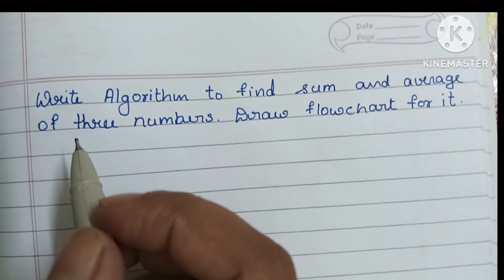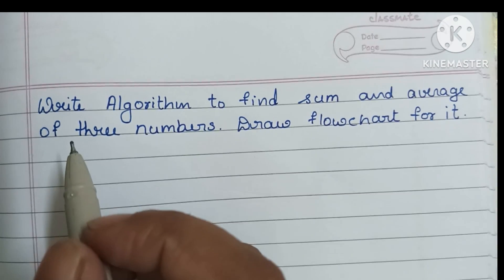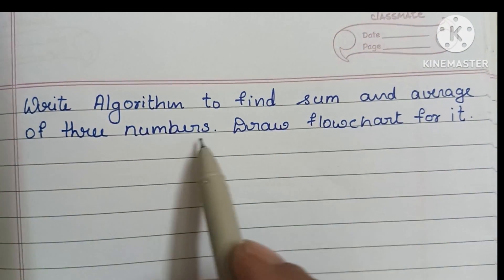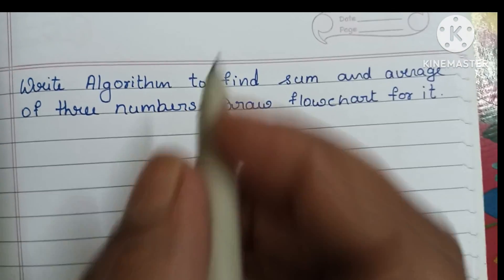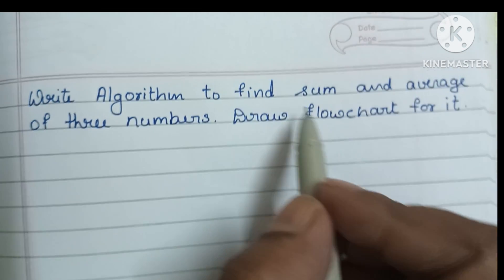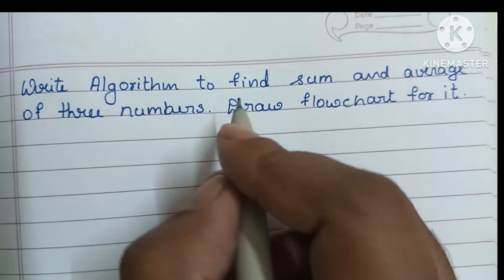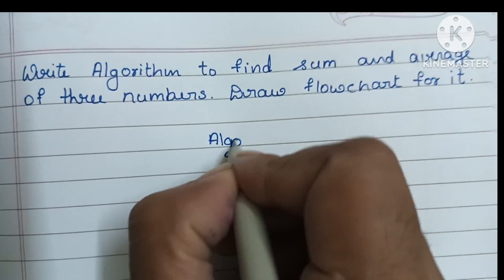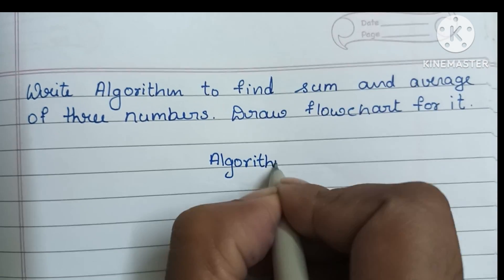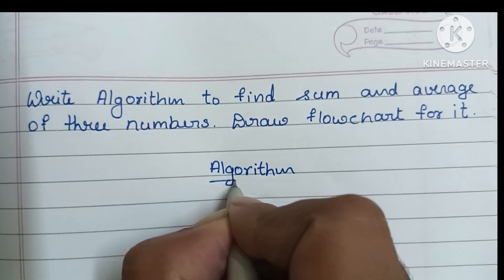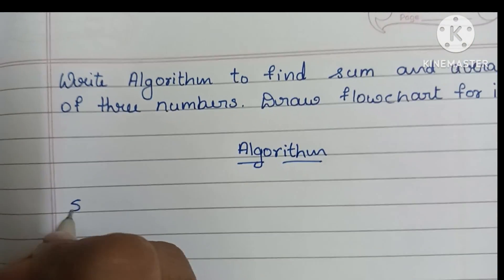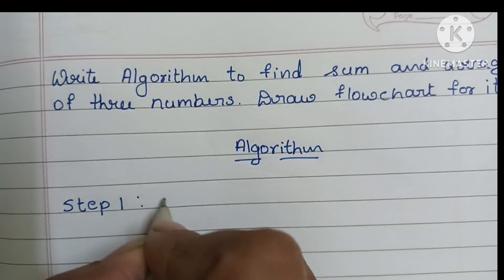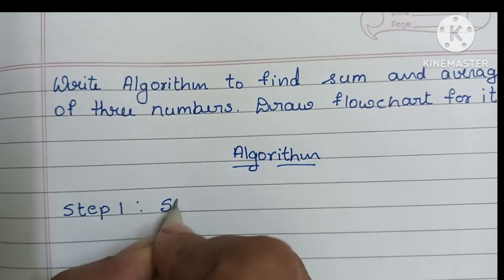In this video, we are going to learn how to write an algorithm to find the sum and average of three numbers and draw a flowchart for it. An algorithm is a step-by-step process to solve a problem. Step one: an algorithm always starts with a start statement.